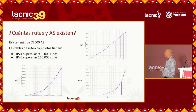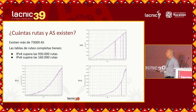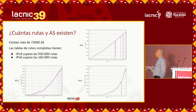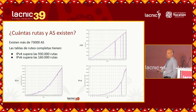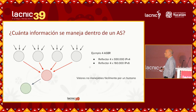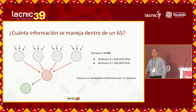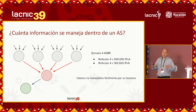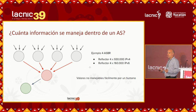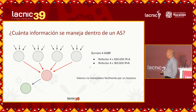Today we have more than 73,000, almost 74,000 autonomous systems. We have more than 900,000 IPv4 routes and more than 160,000 IPv6 routes, almost 180,000. All this information is a large amount, and it is then multiplied when we have within an autonomous system a network that has routers that learn all that information and then propagate it internally to a route reflector or various route reflectors.